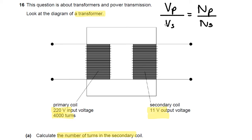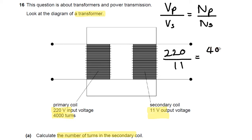Input the numbers that you know. You know the input voltage Vp: 220 volts. You know the secondary voltage: 11 volts. You know the number of turns on the primary coil: 4,000 turns. You don't know the number of turns on the secondary coil — that's something you have to work out.